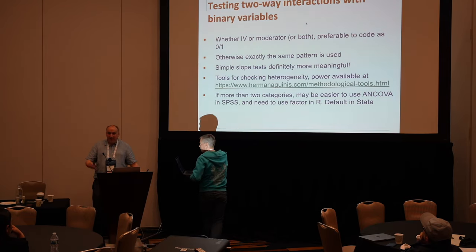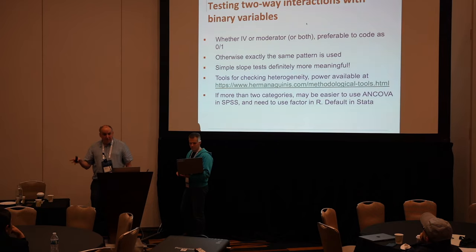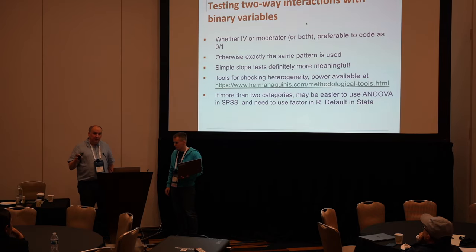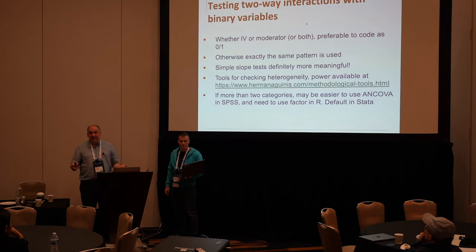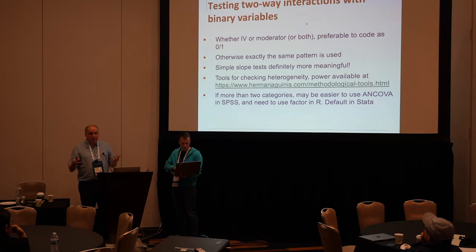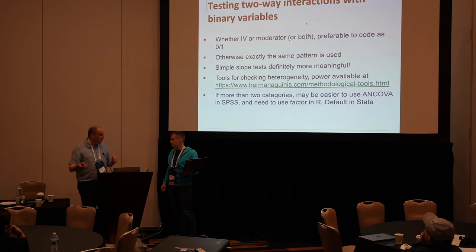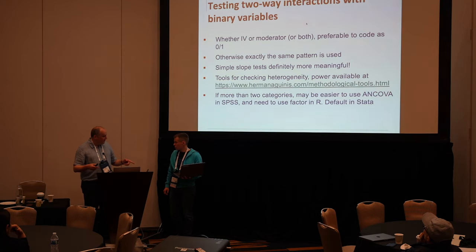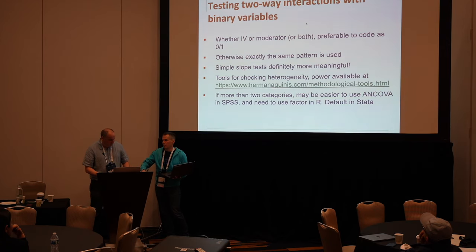The final thing to say is that if you have more than two categories, that's obviously a different situation. You then need to use something specifically for categorical variables — in SPSS, that would probably be the ANCOVA or GLM procedure. In R, you need to make sure your moderator is specified as a factor. As Mikko said earlier, that's the default in Stata anyway, so it shouldn't be a problem. Now I think we've got some questions — I'll plug in my computer and we can go to the question list.